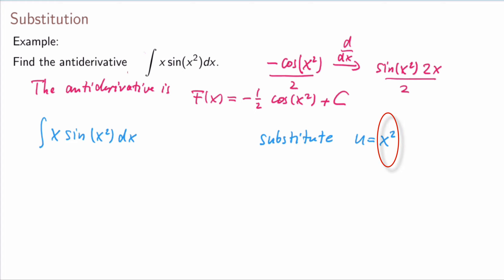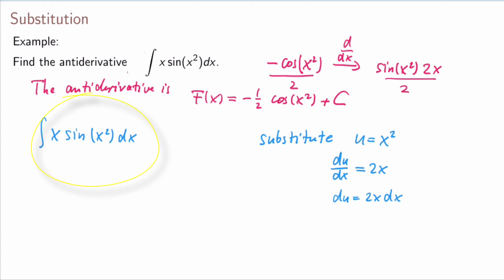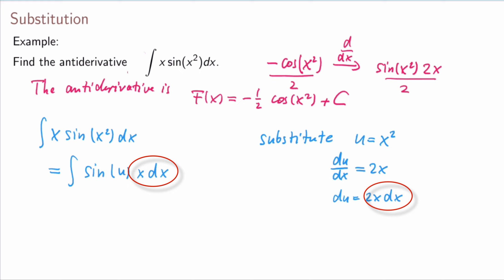We differentiate: du/dx = 2x, and using differentials we write du = 2x dx. Going back to the integral and replacing x² by u, we notice the term x dx also appears — and from our substitution, x dx = du/2. So the integral becomes the integral of sin(u) · (1/2) du.